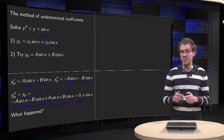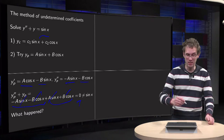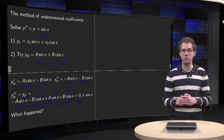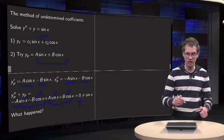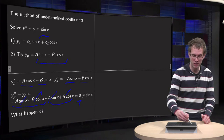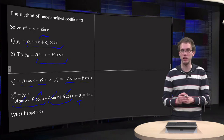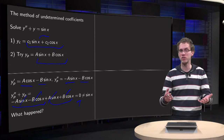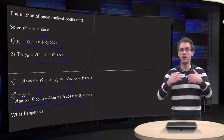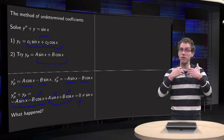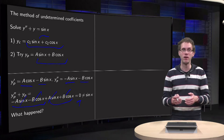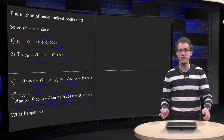Actually, it's not so strange that it zeroes out, because you took A·sin(x) + B·cos(x), which is exactly of the form c1·sin(x) + c2·cos(x) — that's the solution of your complementary equation. So if you plug it into your differential equation, of course you get zero, and of course you won't get sin(x).